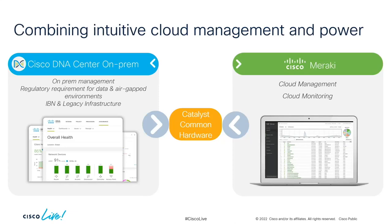This was announced today. What we're really talking about is common hardware — that's really where Cisco is pivoting. We have our best-in-class Meraki, best-in-class Catalyst, and we're allowing customers to choose their own adventure.